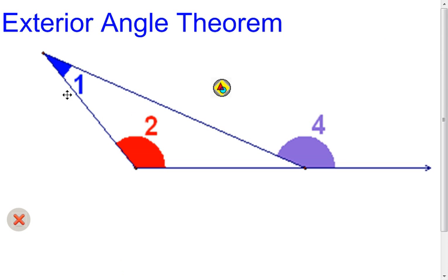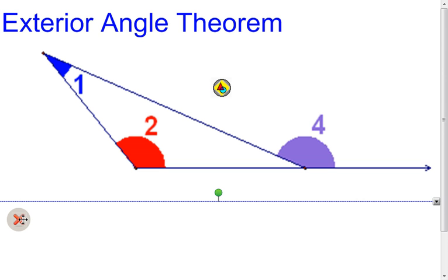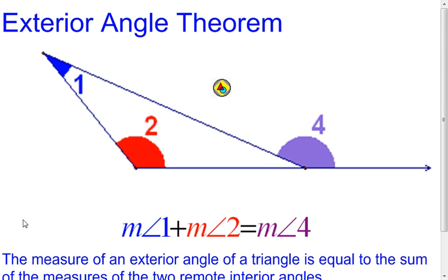Now, referred to as the exterior angle theorem, we're looking at the relationship between the two remote interior angles and the exterior angle. This theorem tells us that if I take the measure of angle one and the measure of angle two — in other words, I add the remote interior angle measures together — it's always going to equal the measure of the exterior angle.